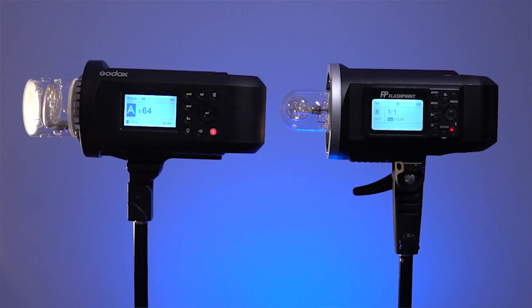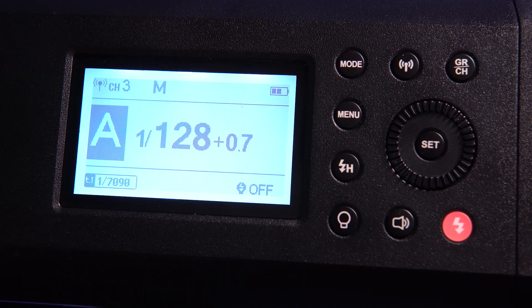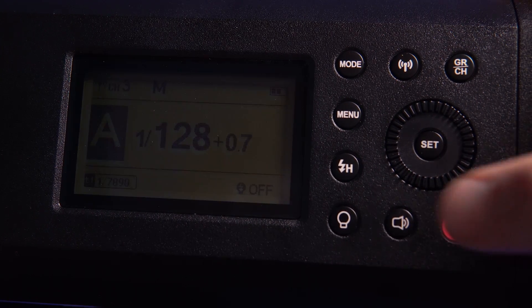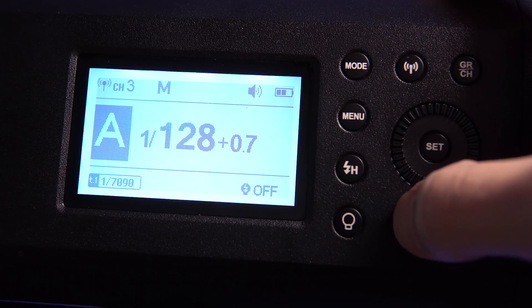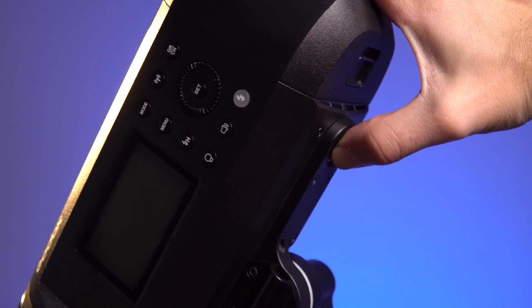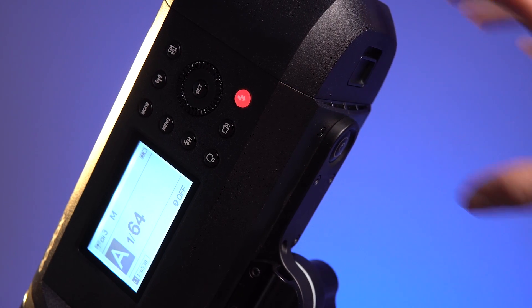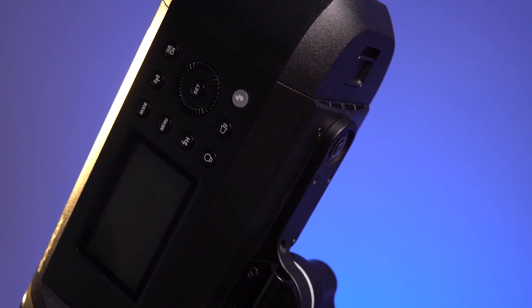The menu is pretty familiar with all the same controls, dials, and display style. The group letter is now represented much larger to allow you to see it from a greater distance. It has the same group wireless mode menu, HSS, modeling lamp, and test button. They have added a sound button for disabling the beep without entering the menu. There's one button missing from the side, and that is the on or off button. It's been moved to the bottom and made much larger. This is great for accessing the power while it's up on a stand.